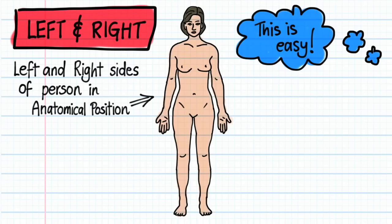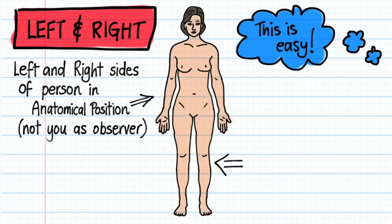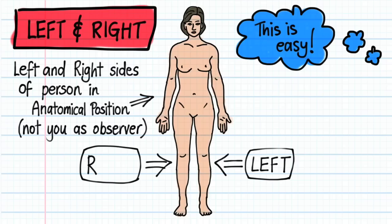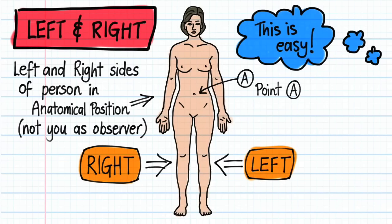We are not referring to the left and right sides of the observer, which in this case would be you looking at this drawing. Consequently, for the woman in this picture, this is her left side and this is her right side. So if you are asked in a test to describe the position of, say, point A relative to the umbilicus or belly button, the correct answer would be: point A is to the left of the umbilicus.